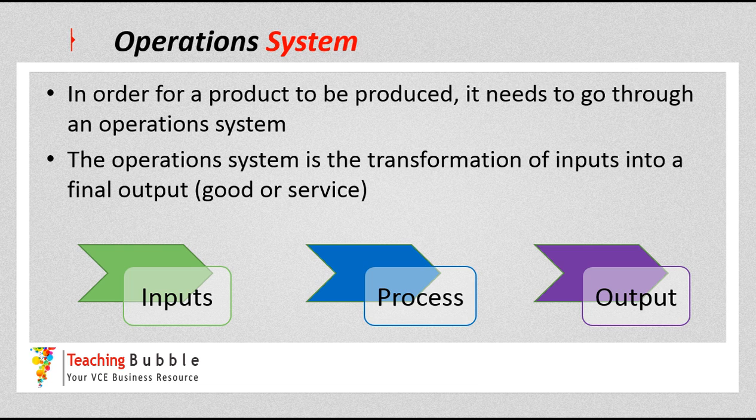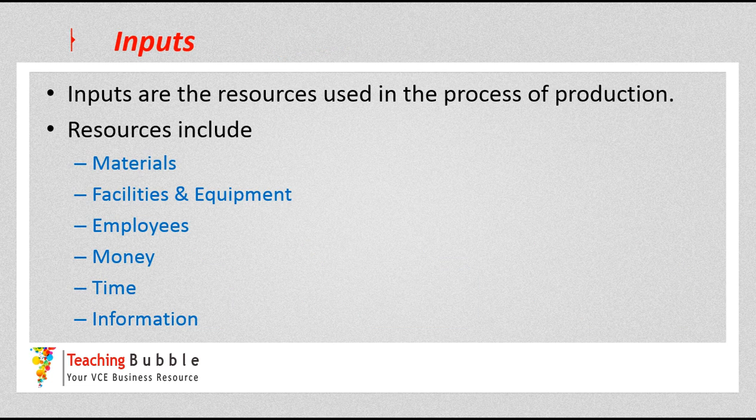There are three elements in the operation system and we'll go through each one individually. We start off with the inputs, then the processes — all the activities involved to turn the inputs into the final product — which is what we call an output. That's as simple as it is, but we need to understand those three elements.